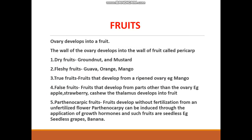After fertilization, the ovary develops into the fruit, and the whole of the ovary wall develops into the pericarp, which is protective in function. True fruits are fruits developed from a ripened ovary, and false fruits are fruits that develop from parts other than the ovary. For example, in apple, the thalamus develops into the fruit.